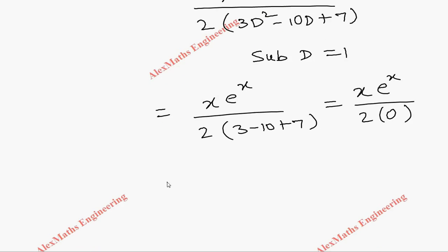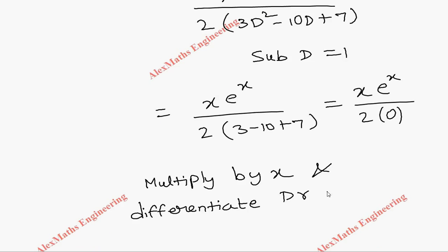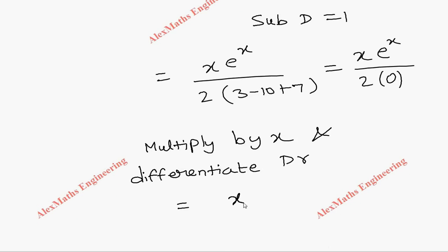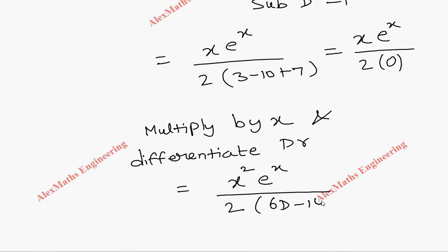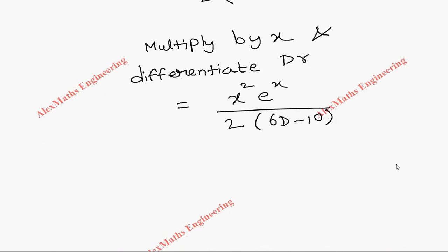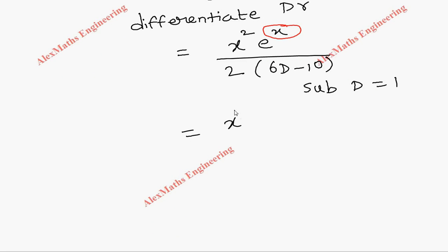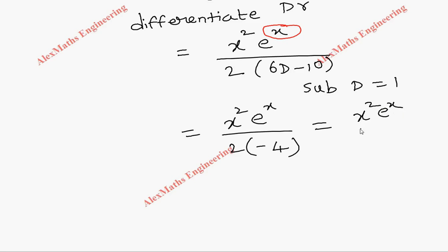Since we get 0 again, we multiply by another x, making x² in the numerator, and differentiate 3D² - 10D + 7 to get 6D - 10. Substituting d = 1: 6(1) - 10 = -4, and with the factor of 2: 2×(-4) = -8. So PI₂ = -x²e^x / 8.